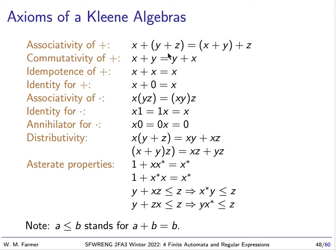The axioms include associativity and commutativity of plus, idempotence of plus — meaning X plus X equals X — and zero as the identity element for plus. We have associativity of dot, with one as the identity element, and note that X1 equals 1X because dot is not commutative. We also have zero as the annihilator for dot: X0 equals 0X equals 0. Then we have distributivity laws, and more complicated laws for the asterisk properties, where A less than B stands for A plus B equals B.